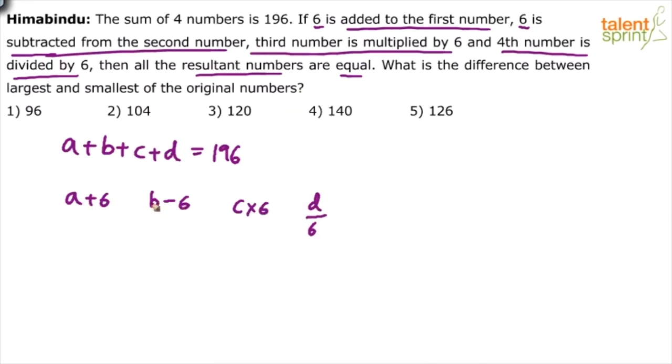Add 6 to the first number, subtract 6 from the second number, multiply 6 to the third number and divide fourth number by 6. All these are equal. They are all equal, which means we can say all these are equal to K. Let us assume all these values are equal to K.